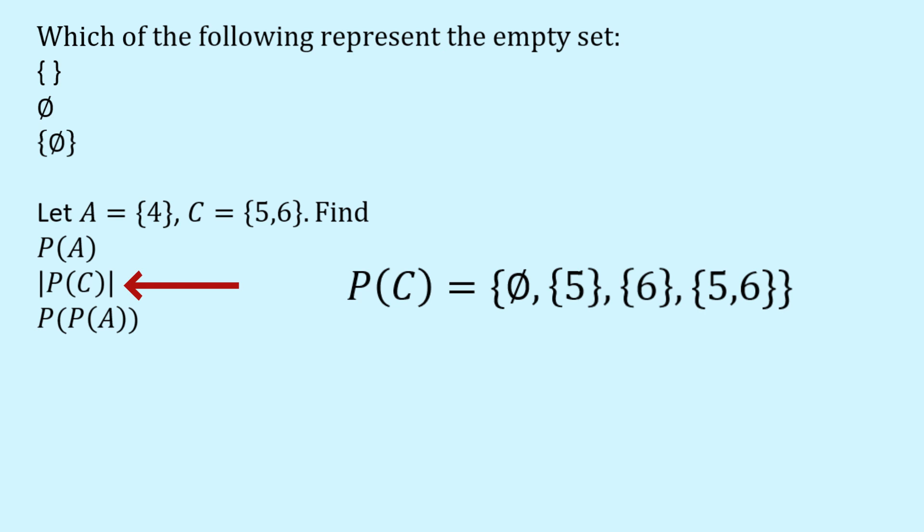So now when I look at the set, the power set, I can see that there are four items in it. And so the cardinality of the power set of C is four.